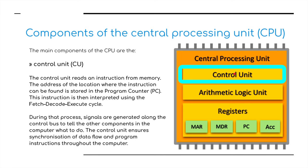Starting with the control unit. The control unit reads an instruction from memory. The address of the location where the instruction can be found is stored in the PC — the program counter register. This instruction is then interpreted using the fetch-decode-execute cycle, which we'll be covering in the second video. During that process, signals are generated along the control bus to tell the other components in the computer what to do. The control unit ensures synchronization of data flow and program instructions throughout the computer, controlling everything.